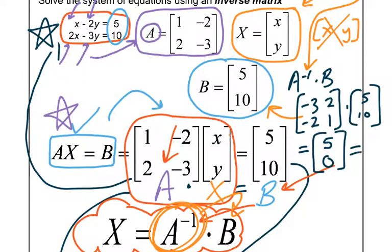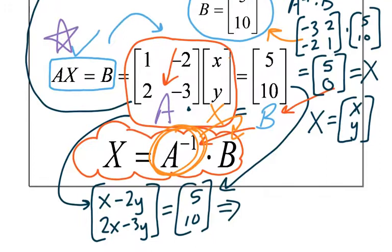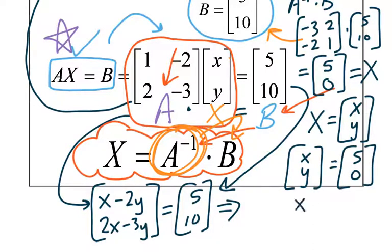Now that should be my X matrix. And remember, the X matrix is made up of the variables we're solving for, X and Y. So basically, if X is equal to XY, and X matrix that we solve for numbers are 5, 0, can you guys see that my solution is X equals 5 and Y equals 0. And there you go. Or we could write it as a coordinate pair of 5 comma 0. Either way is okay.